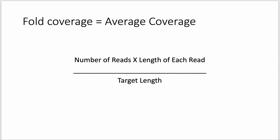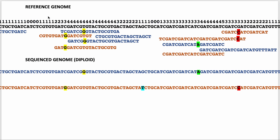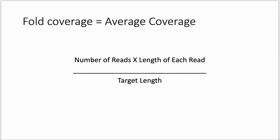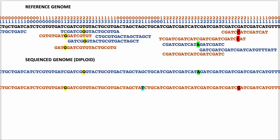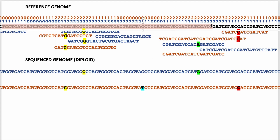This gets to the concept of coverage. Fold coverage can also be thought of as average coverage — the average number of reads covering each position in either the diploid or haploid condition. You can count up all the coverage numbers and get an average; it looks like about three in this case. But the simpler way to calculate average coverage is: the number of reads multiplied by the length of each read — here probably about 15 base pairs on average — divided by the target length, which for the human genome would be the number of nucleotides in the reference genome.